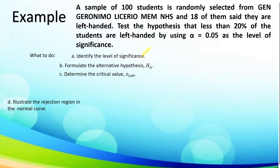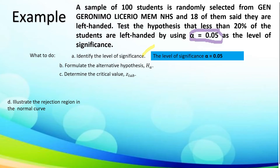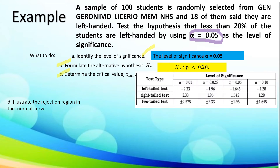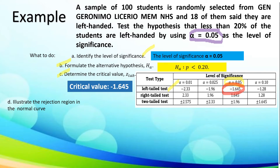To identify the level of significance, we have alpha equal to 0.05. To formulate the alternative hypothesis, we have H_a: P is less than 0.20. To determine the critical value, we are going to utilize the Z-table. Since this is a left-tailed test with alpha of 0.05, our critical value or Z-tab is negative 1.645.